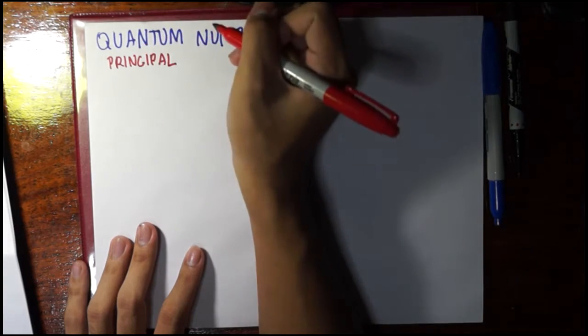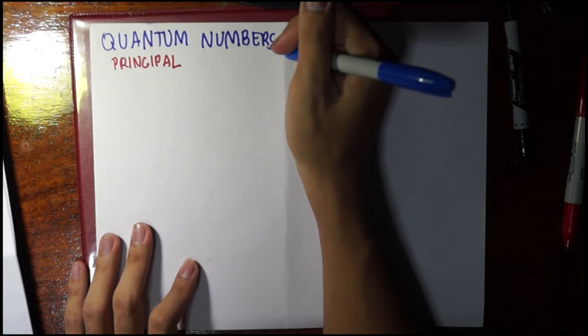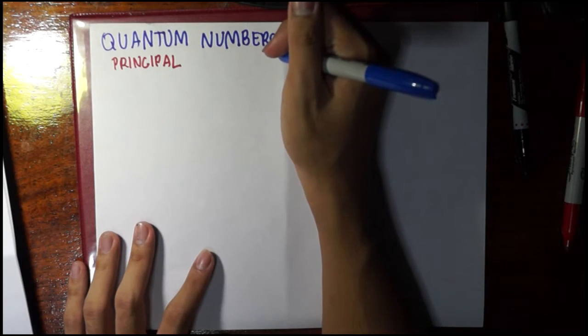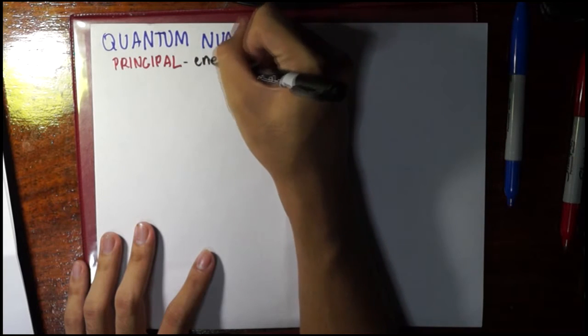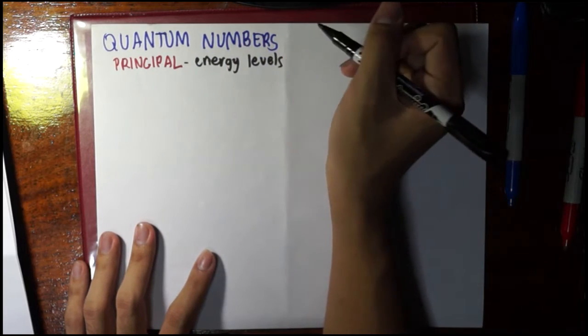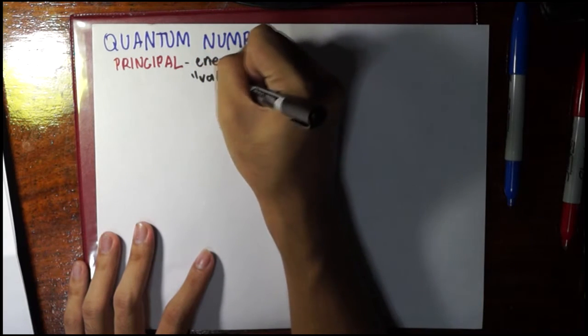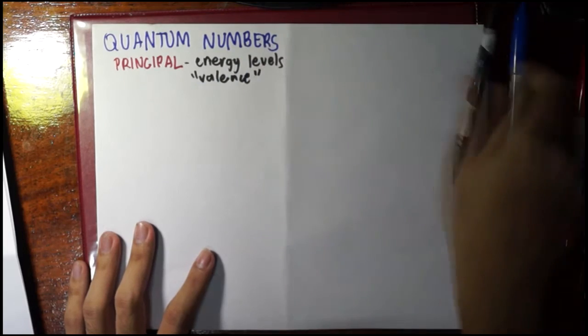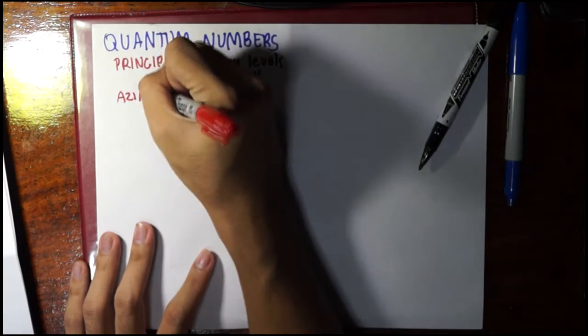The principal quantum number describes the valence and the core energy levels, so this talks about the energy levels. The outermost energy level would be called the valence.